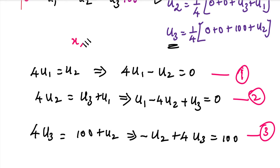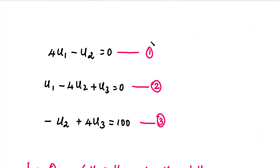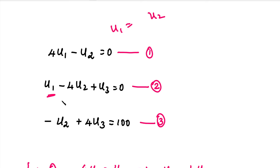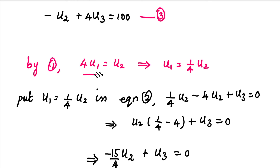There are three unknowns: u1, u2, u3. We solve by elimination. From equation 1, 4u1 = u2, so u1 = (1/4)u2. We substitute this expression for u1 into equation 2 to reduce to two equations in u2 and u3.